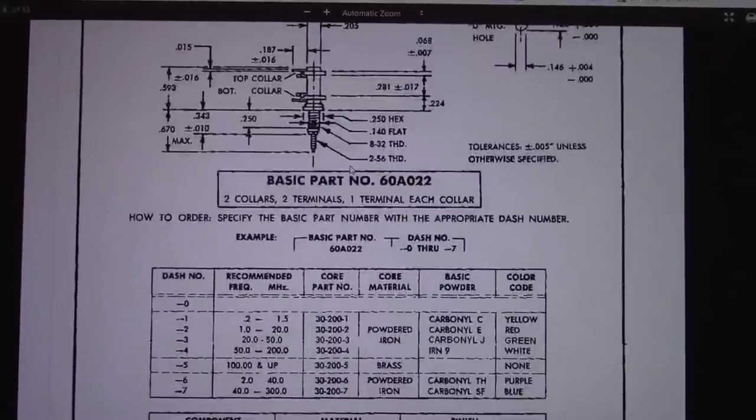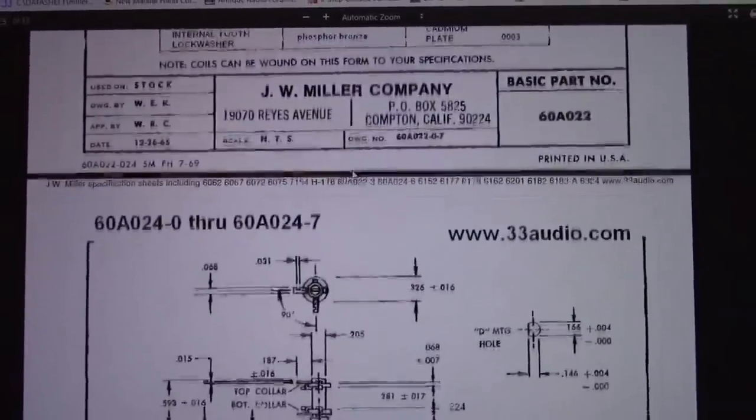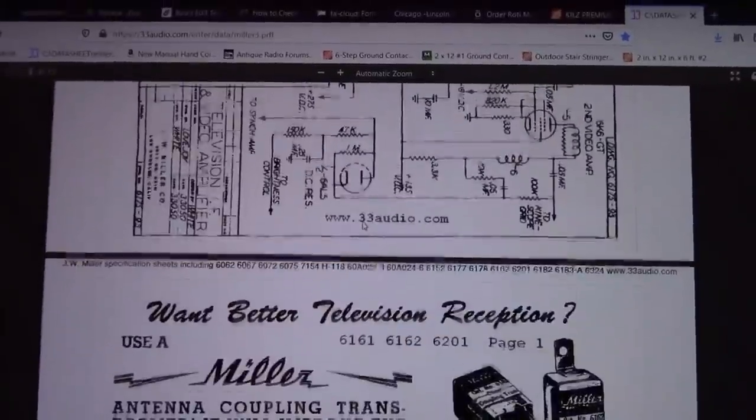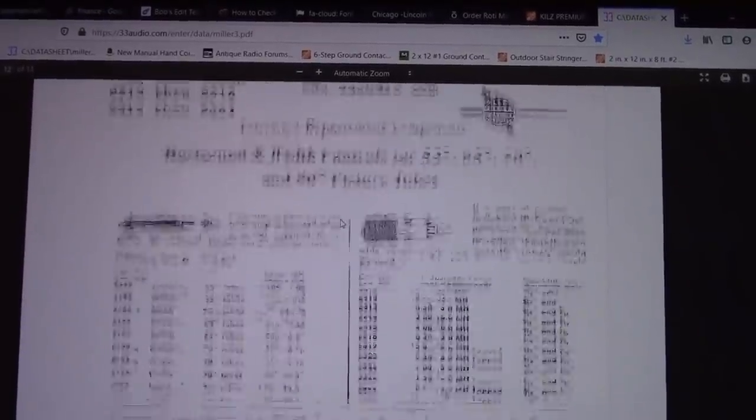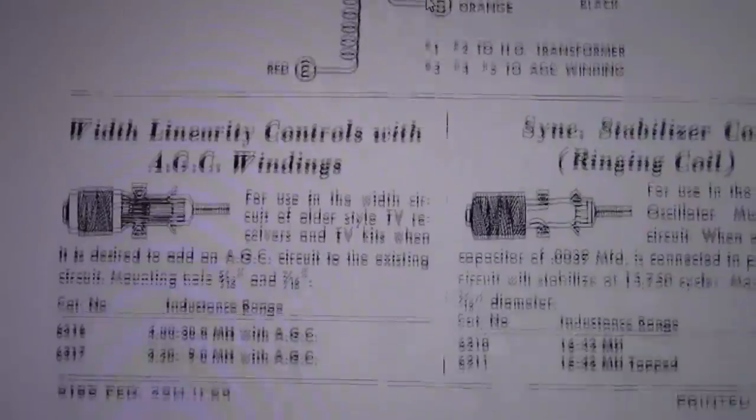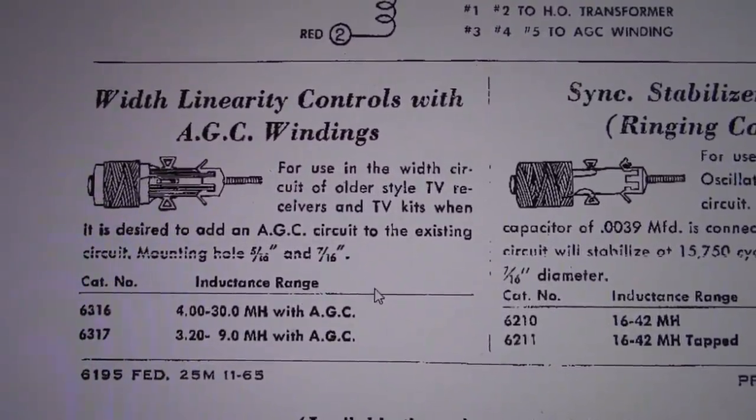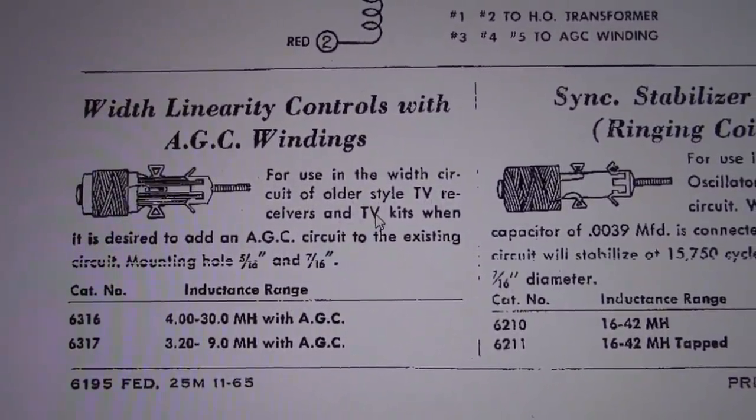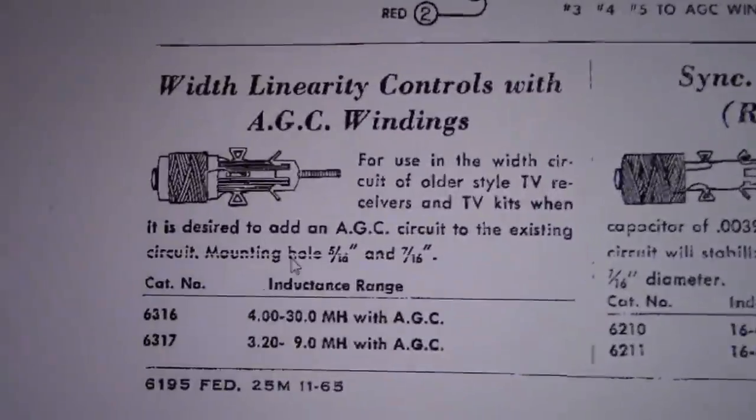However, somebody scanned and posted a JW Miller catalog. It's a company that made, and I believe still does make, all sorts of coils. Back in the day they made a lot of replacements for flybacks and width coils and peaking coils and whatnot. So I got to looking through this and it turns out that they made two coils. There's something else in here of interest too that we're going to talk about a bit. But first, here we go. Width linearity controls with AGC winding. The 6316 and the 6317. For use in the width circuit of older style TV receivers and TV kits when it is desired to add an AGC circuit to the existing circuit. Okay, that's basically what I need.